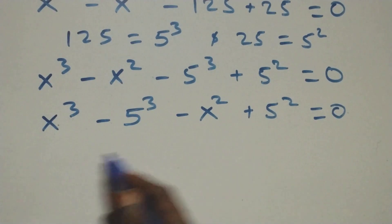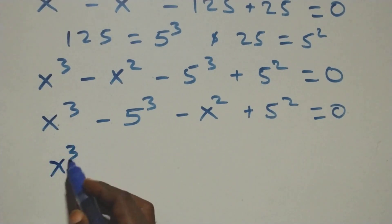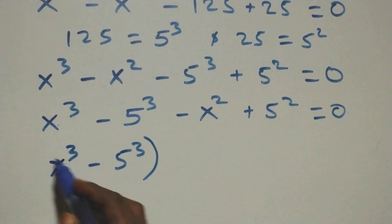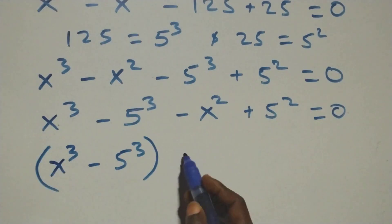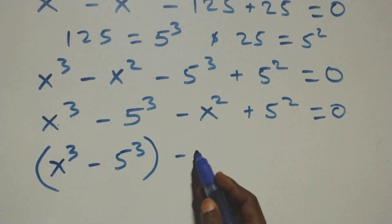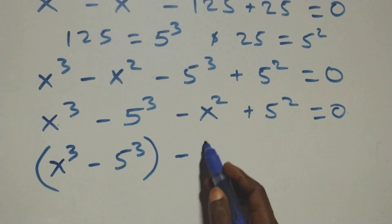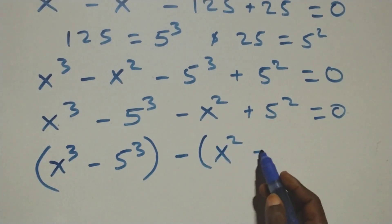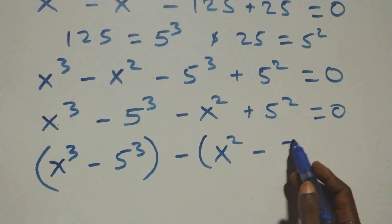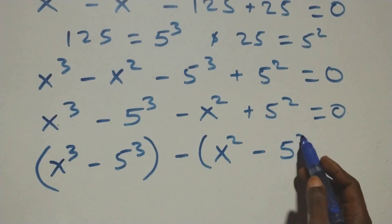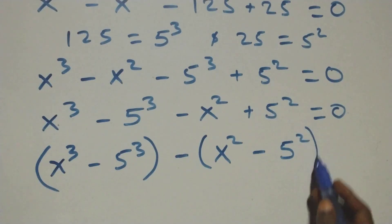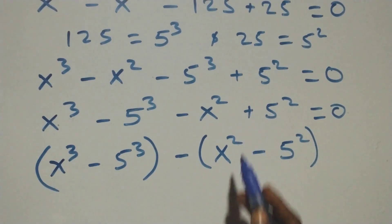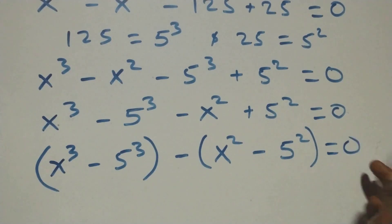Now, this can be written as x raised to power 3 minus 5 raised to power 3 together in brackets, then minus, factor out here — we mean x raised to power 2 minus 5 raised to power 2 here. Since this is plus, this minus multiplies and it becomes plus, equals to 0 here.